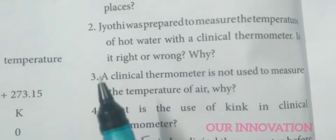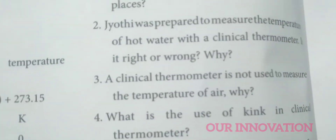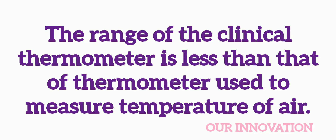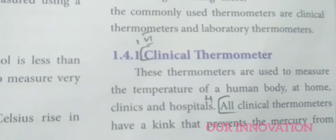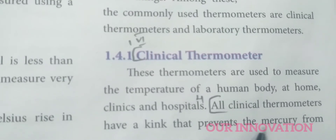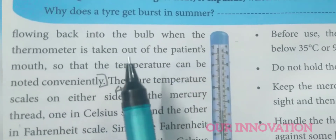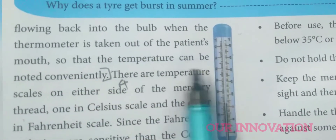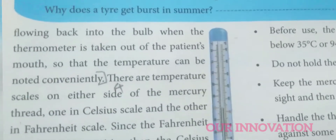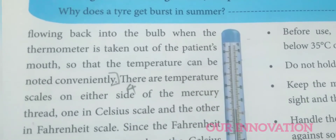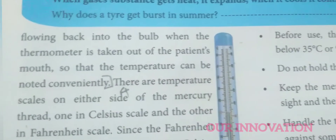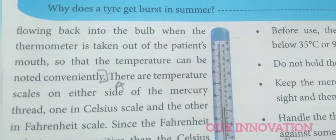A clinical thermometer is not used to measure the temperature of air because the range of a clinical thermometer is less than that of a thermometer used to measure the temperature of air. The kink in a clinical thermometer prevents the mercury from flowing back into the bulb when the thermometer is taken out of the patient's mouth, so that the temperature can be noted conveniently.